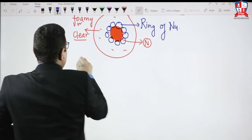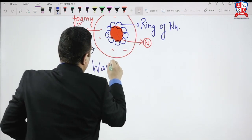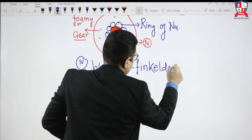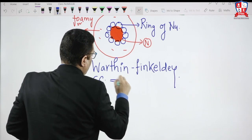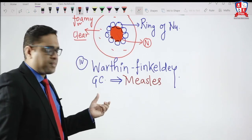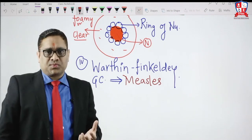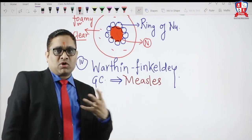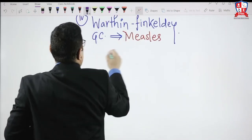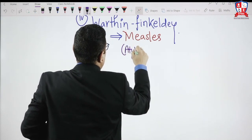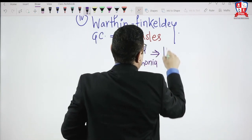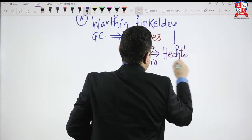The fourth pathologic giant cell — a previous year All India question — is the Warthin-Finkeldey giant cell. The question was: Warthin-Finkeldey giant cells are seen in which infection? The answer is measles. Warthin-Finkeldey cells are seen in measles infection. When they affect the lung tissue, measles causes atypical pneumonia. This atypical pneumonia seen in measles is called HETS pneumonia. This point we have to keep in mind.